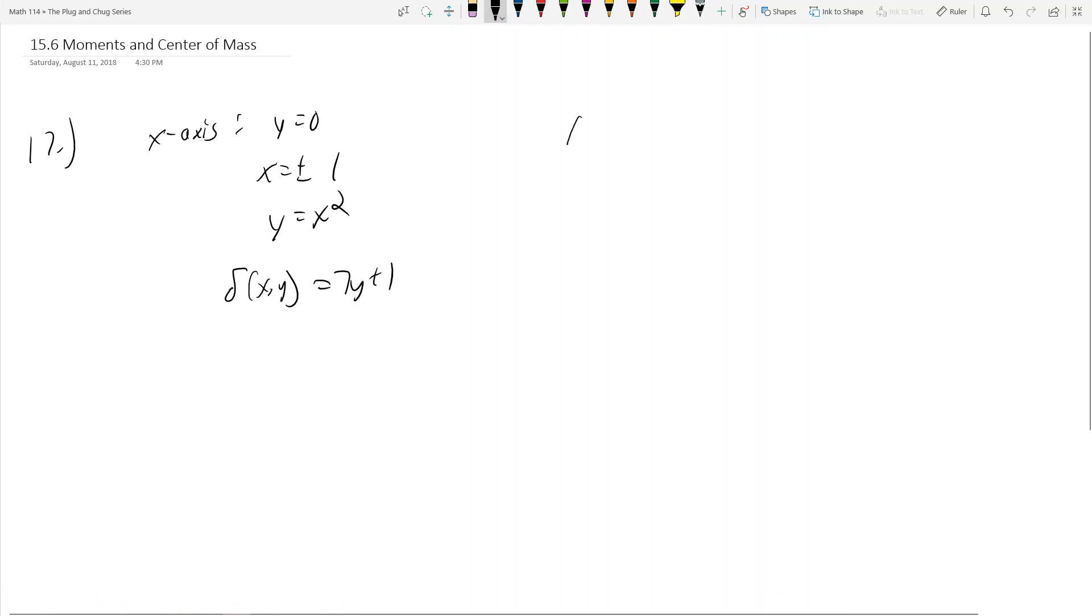So here's the problem. We want to find the center of mass and the moment of inertia, but we're only doing center of mass because that will make this video too long. So we want to find the center of mass of a thin plate bounded by the x-axis, which is y equals 0, the lines x equals plus or minus 1, and the parabola y equals x squared, and you're given a density function delta(x,y) equals 7y plus 1.